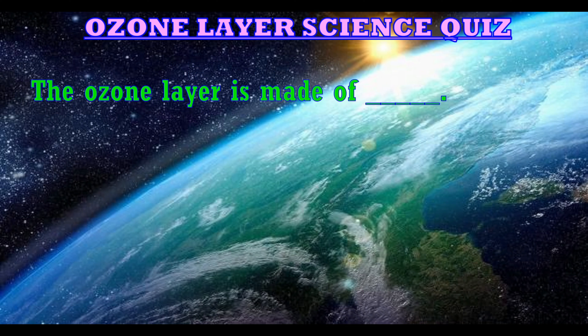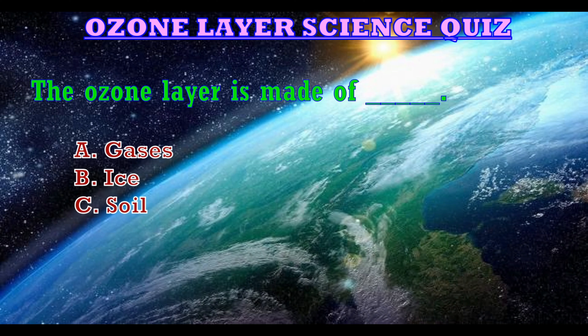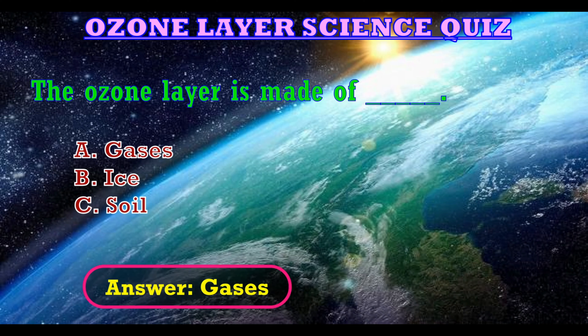Another question: the ozone layer is made of? The options are: A. Gases, B. Ice, C. Soil. The correct answer is Gases.